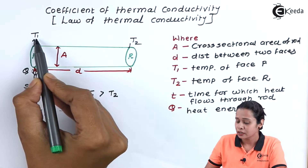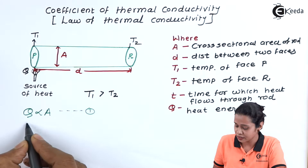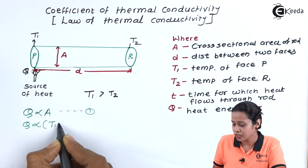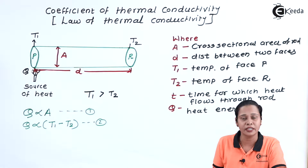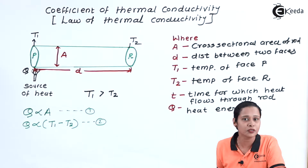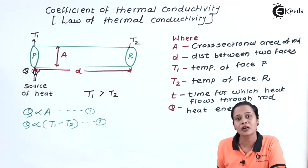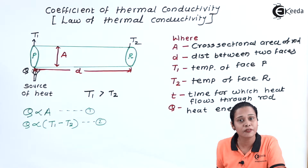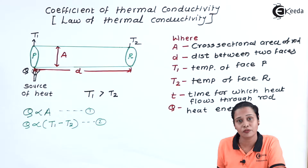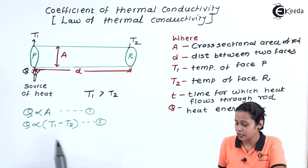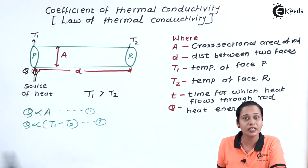Heat is proportional to the difference of temperature of the two ends. We can write Q is directly proportional to T1 minus T2. This is equation 2. This is similar to considering two water levels — if the first water level is at a very high height and another is at a low height, the greater the height difference, the greater the speed of water flow. Similarly here, if the temperature difference is more, then the heat transfer will be more.